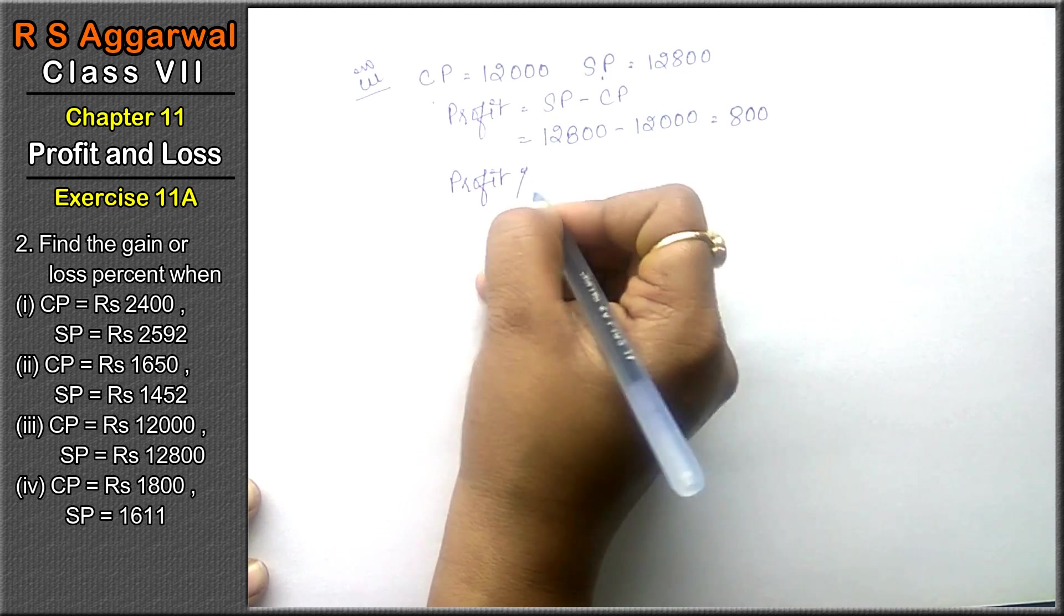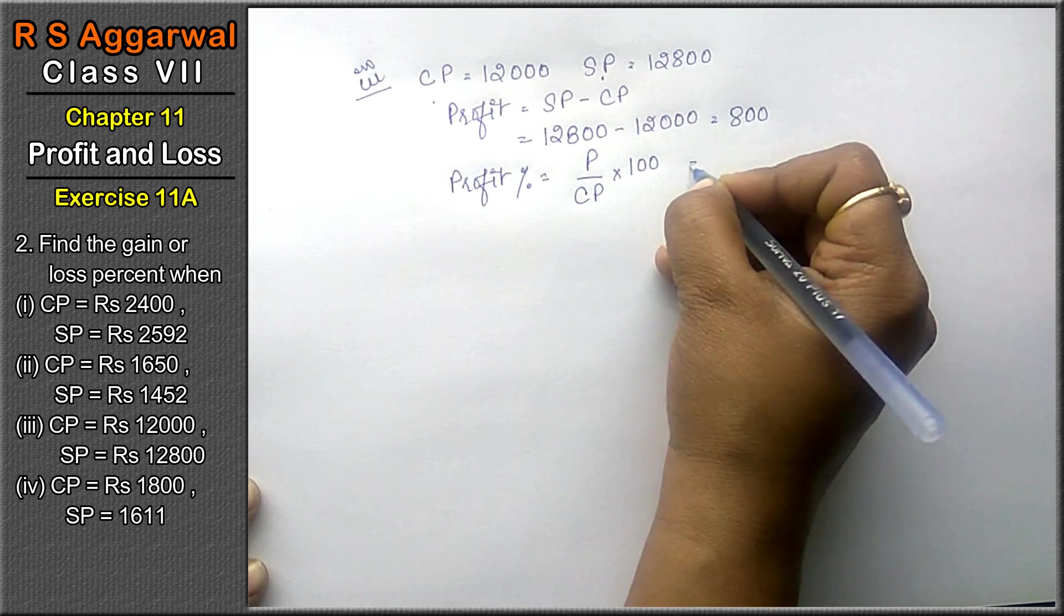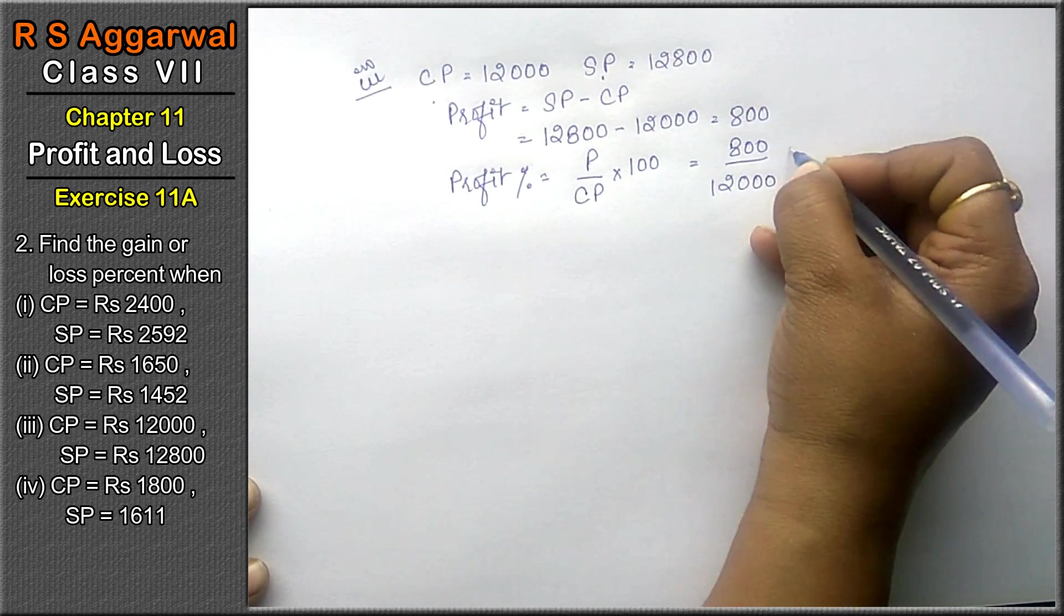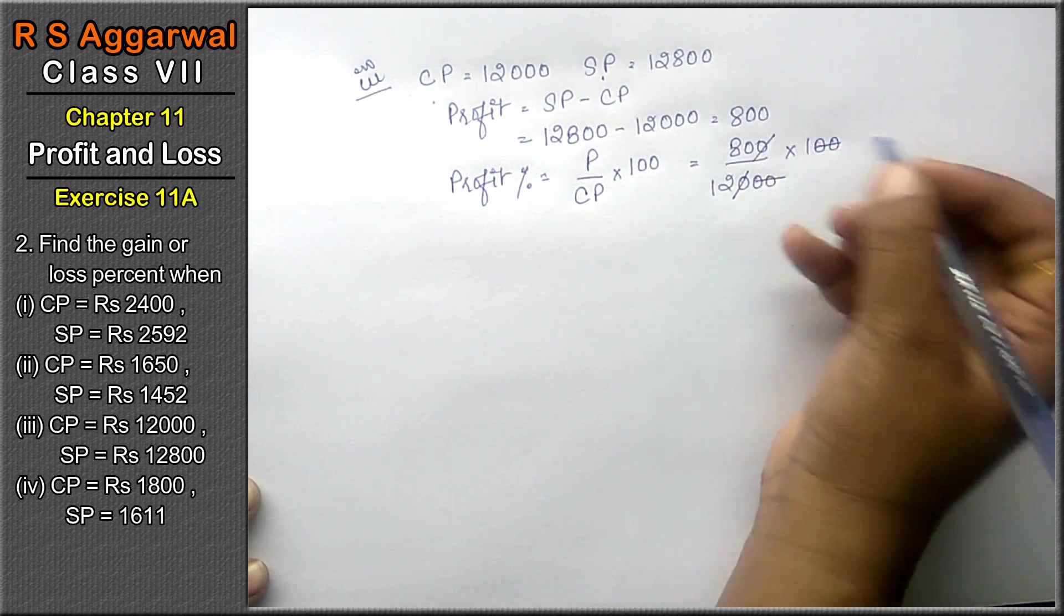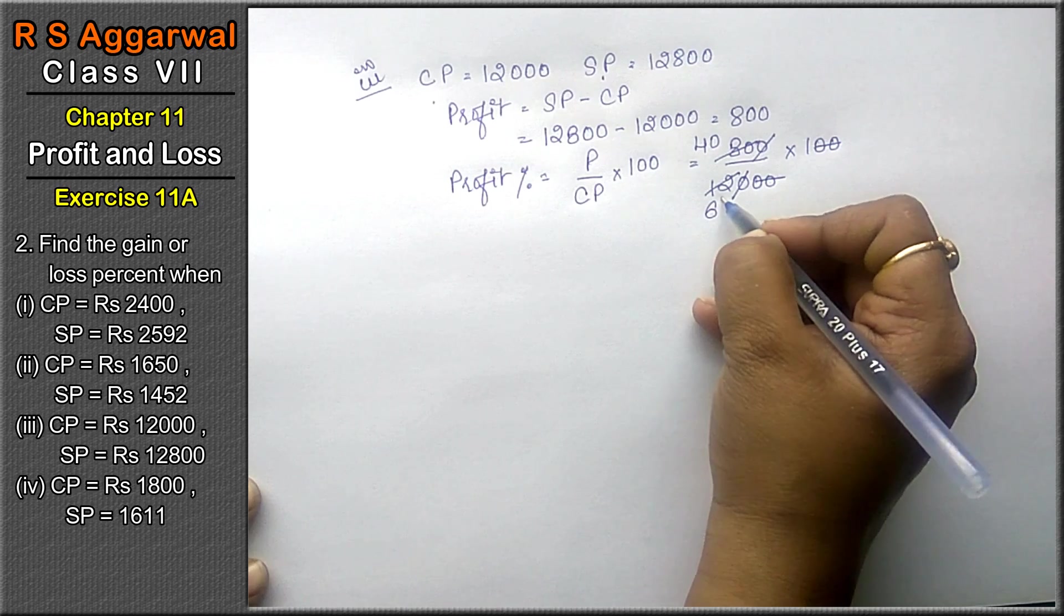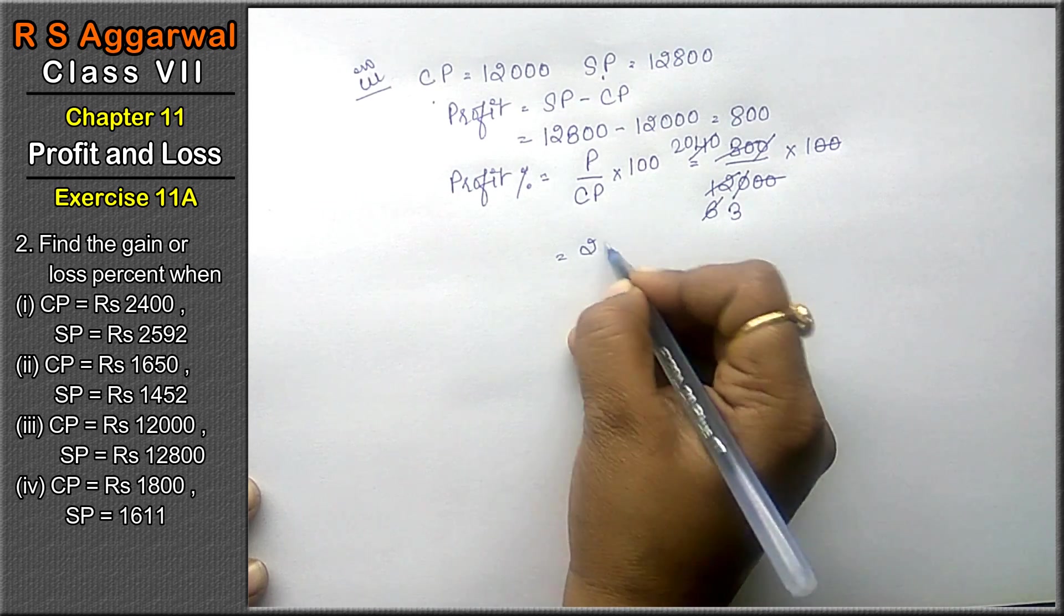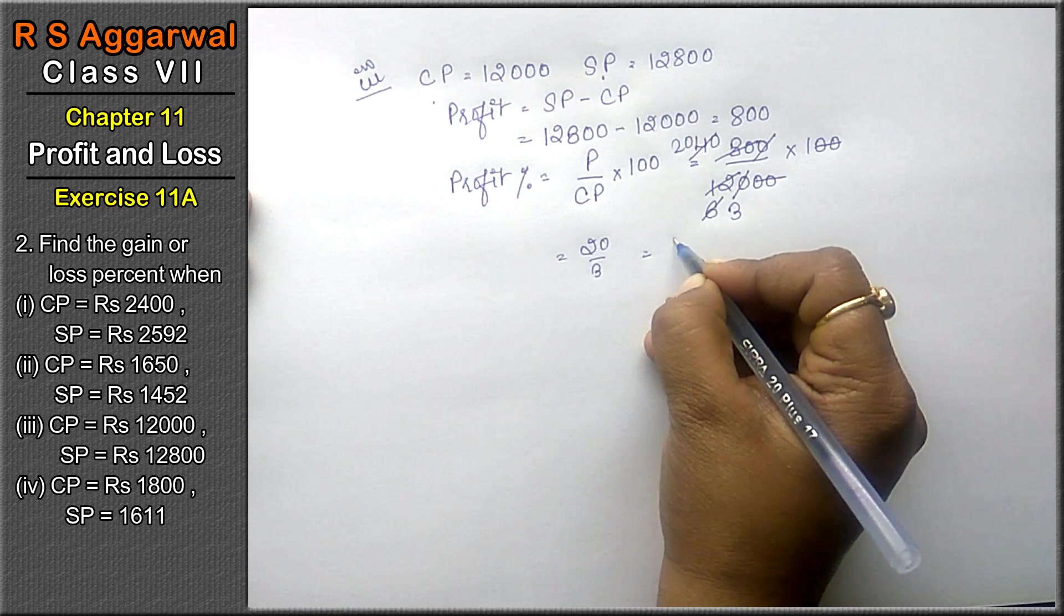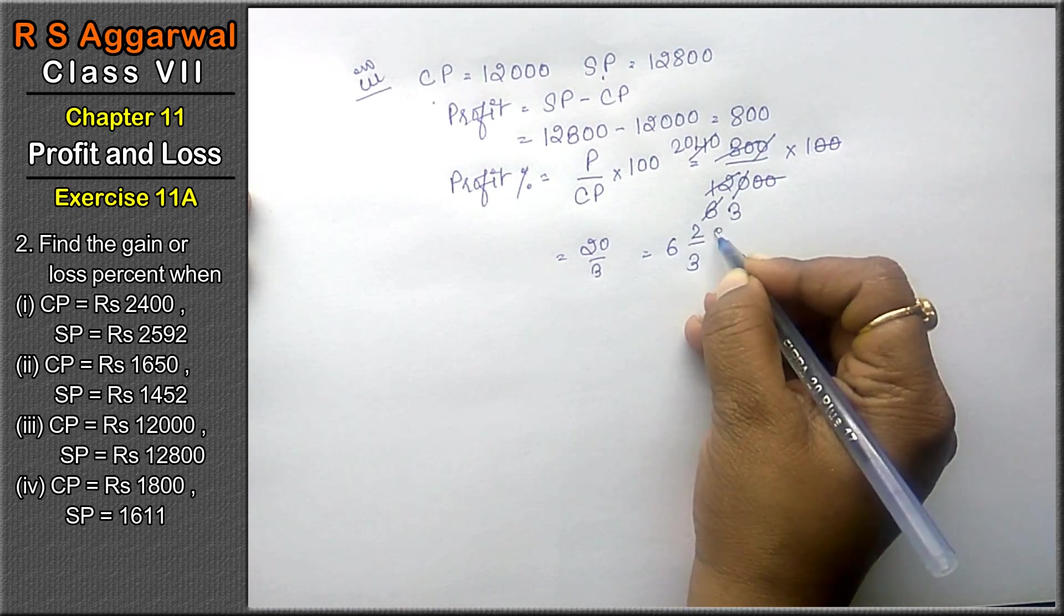Profit percentage equals to profit upon CP into 100. Profit was 800 rupees, CP is 12000 into 100. Canceling zeros and simplifying: 2 fours are 8, 2 sixes are 12, 2 ones are 2, 2 threes are 6. The answer is 20 upon 3. Profit percentage is 20 upon 3, or we can write it as 6⅔ percent.